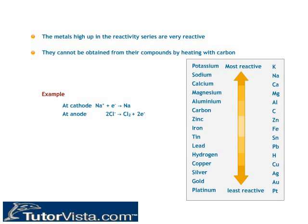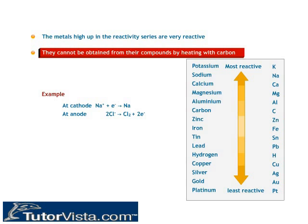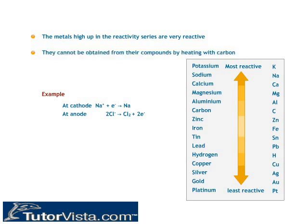Extracting metals towards the top of the activity series: Metals high up in the reactivity series are very reactive and cannot be obtained from their compounds by heating with carbon. For example, carbon cannot reduce the oxides of sodium, magnesium, calcium, and aluminium, because these metals have more affinity for oxygen than carbon. These metals are obtained by electrolytic reduction. Sodium, magnesium, and calcium are obtained by the electrolysis of their molten chlorides. The metals are deposited at the cathode (the negatively charged electrode), whereas chlorine is liberated at the anode (the positively charged electrode).